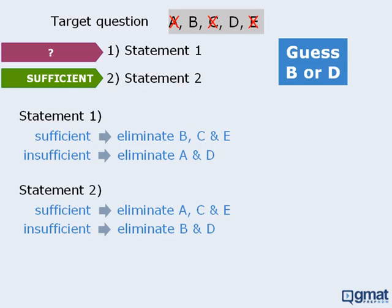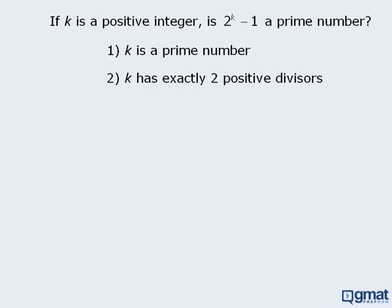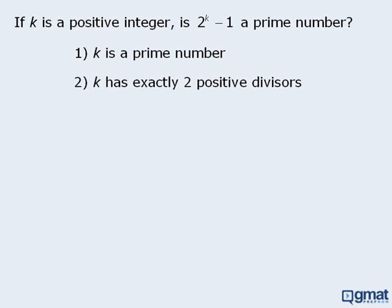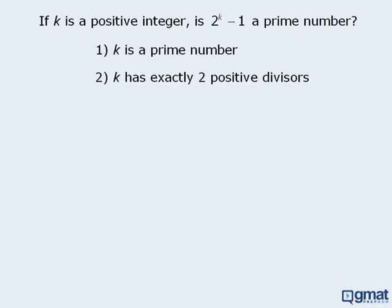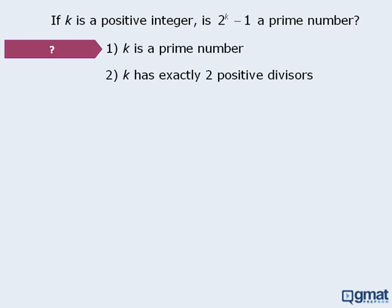Now there is one more tip you should know about. We'll illustrate this tip using the following example. In this question, we want to determine whether 2 to the power of k minus 1 is a prime number. This is a very difficult question, and probably beyond the scope of the GMAT. Let's say that we are unable to determine whether or not statement 1 is sufficient, and also unable to determine whether or not statement 2 is sufficient. However, notice that statement 1 and statement 2 provide the same information. Statement 1 tells us that k is a prime number, and statement 2 tells us that k has exactly two positive divisors.